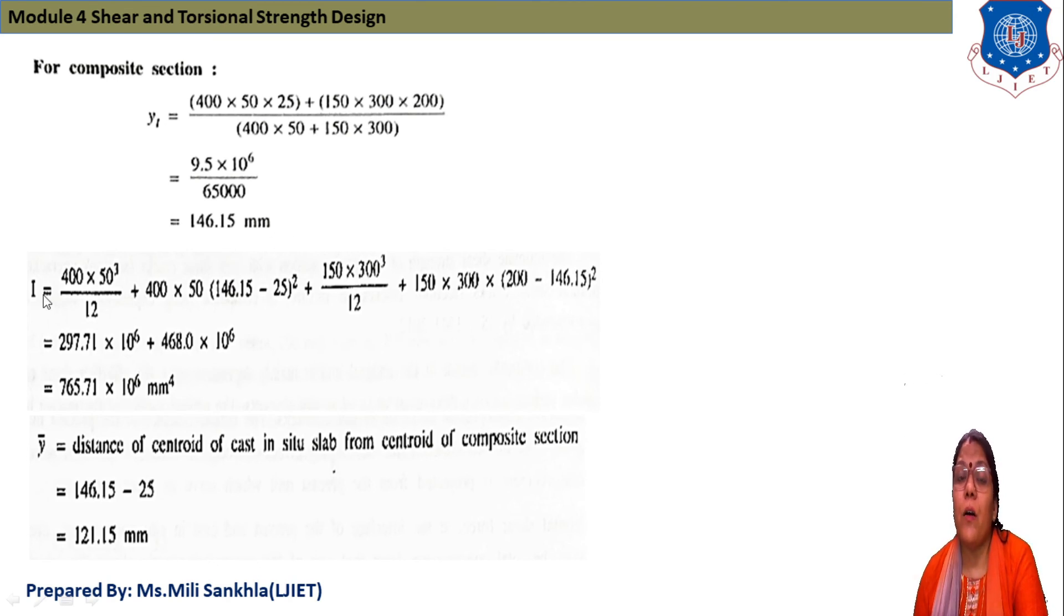Moment of inertia according to parallel axis theorem: Ig + Ay̅². We get I = 765.71 × 10⁶ mm⁴. Now ȳb, that means our yb, is equal to distance of centroid of cast-in-situ slab from centroid of composite section.